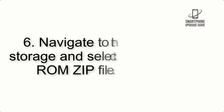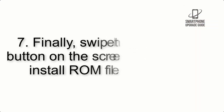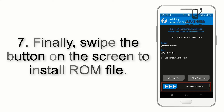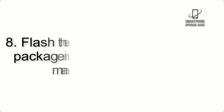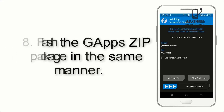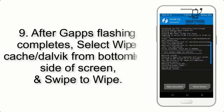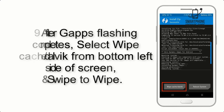Step 5: Go back to the recovery main screen and tap on the Install button. Step 6: Navigate to the storage and select the ROM zip file. Step 7: Swipe the button on the screen to install the ROM file. Step 8: Flash the gapps zip package in the same manner. Step 9: After gapps flashing completes, select Wipe Cache and Dalvik from the bottom left side of the screen and swipe to wipe.